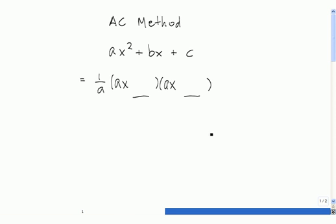Then the last step is to fill in these two blanks. The numbers that go here should have a product of the leading coefficient a times the constant c. These two numbers should also have a sum of the coefficient of x which is b.